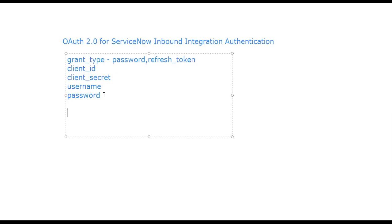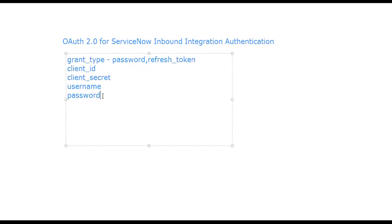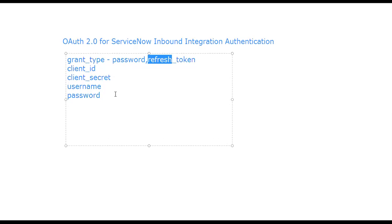When a third-party tool tries to access the API using OAuth 2.0, they first have to get an access token. The API is authenticated through this access token. The first time, they always need to get the access token using username and password, and along with the access token they will also receive a refresh token.